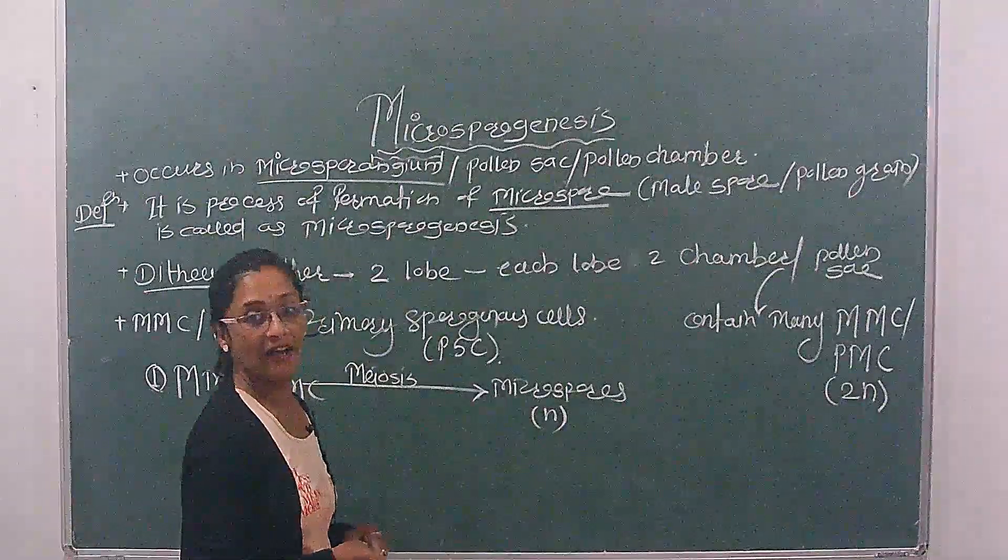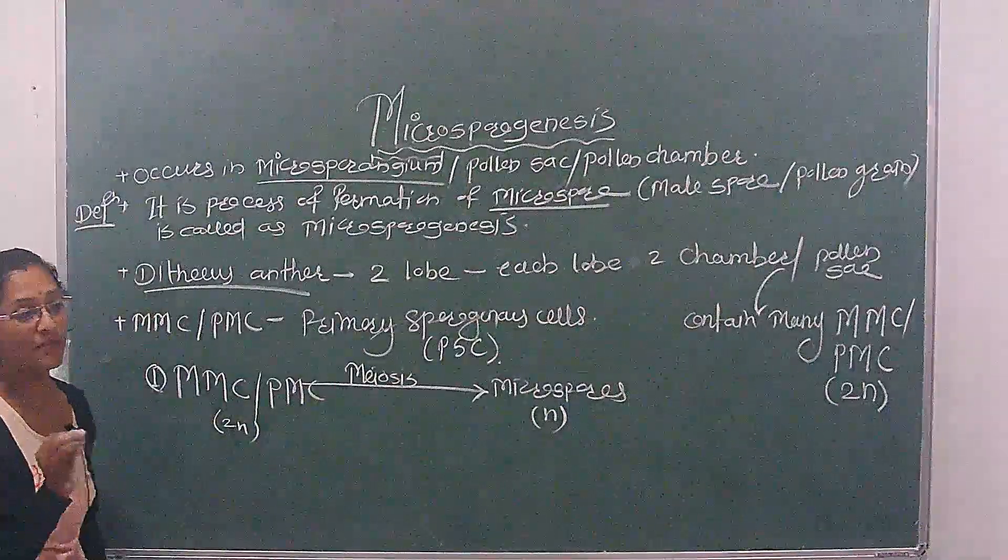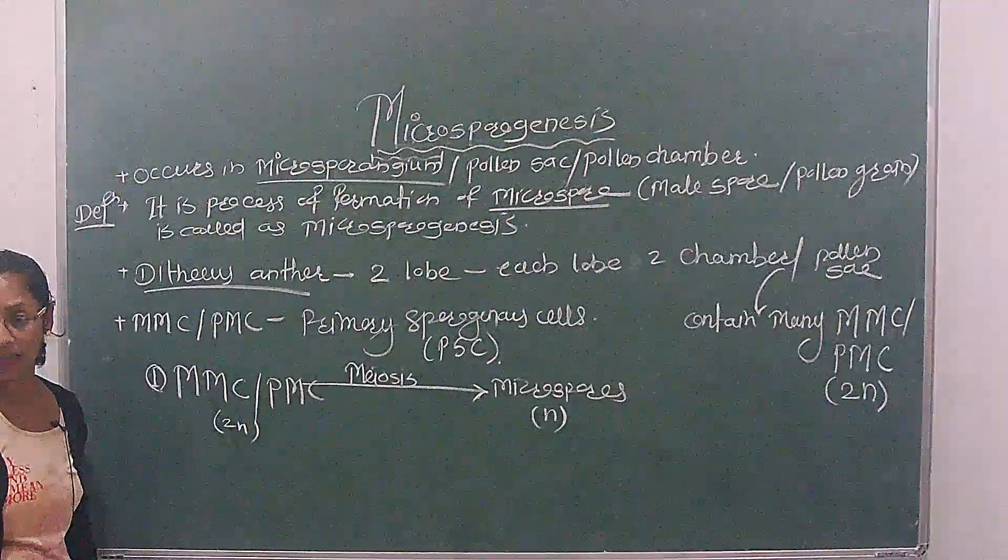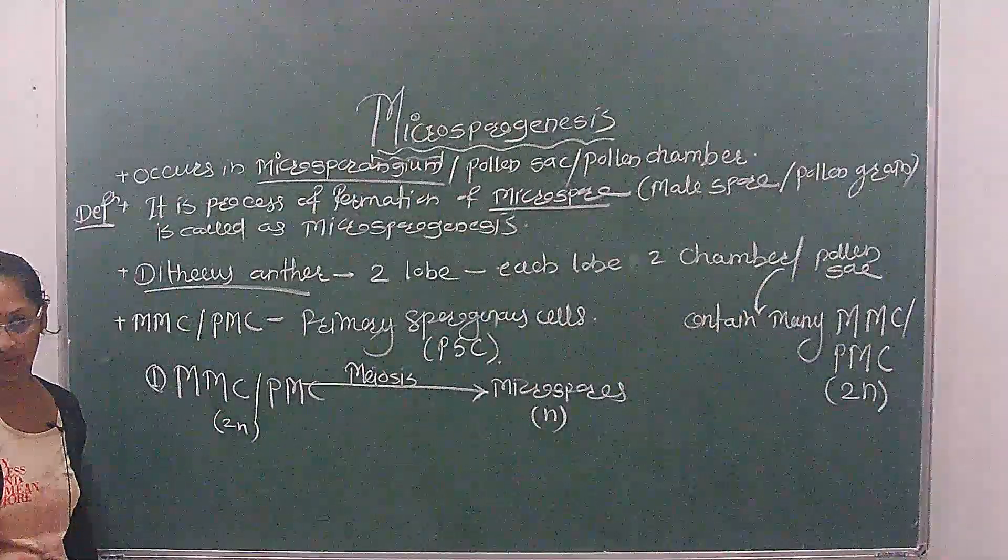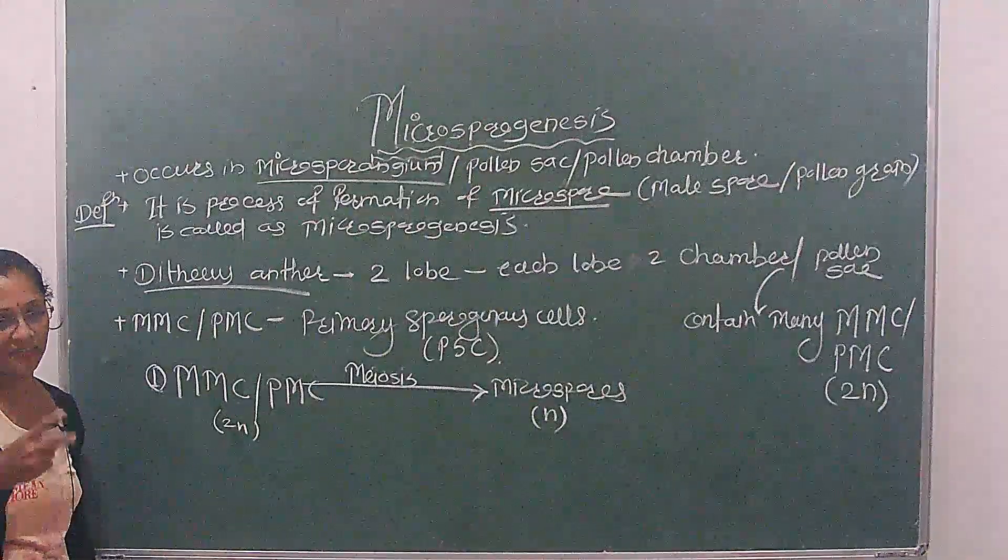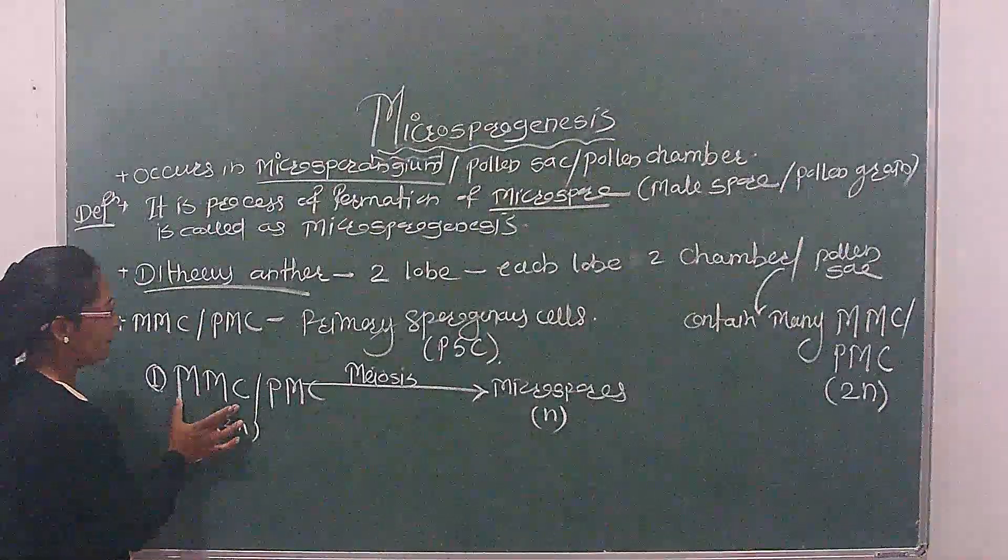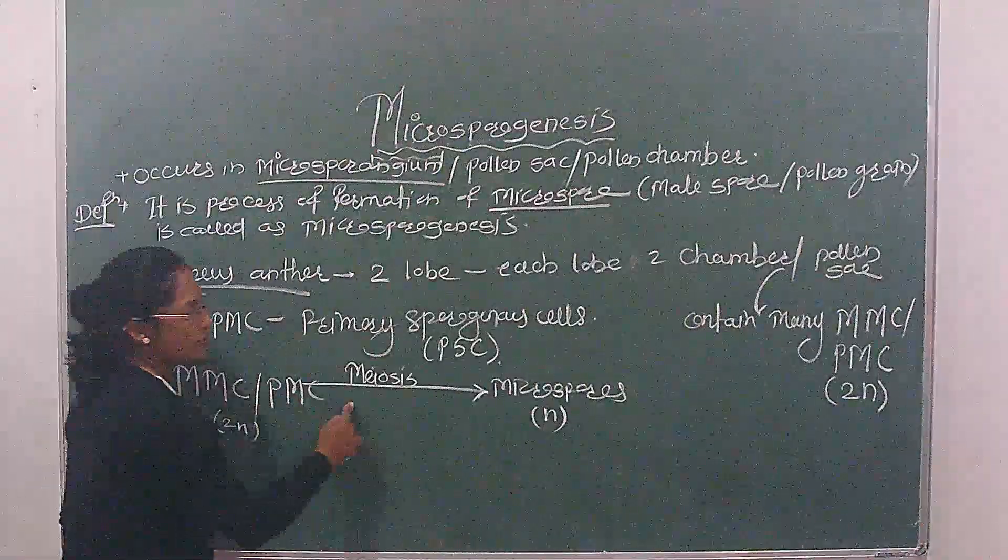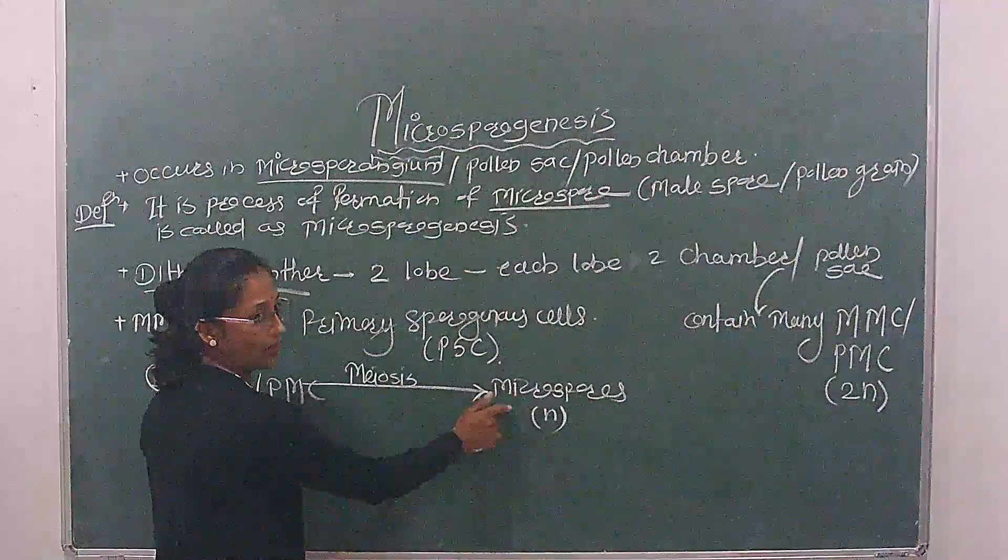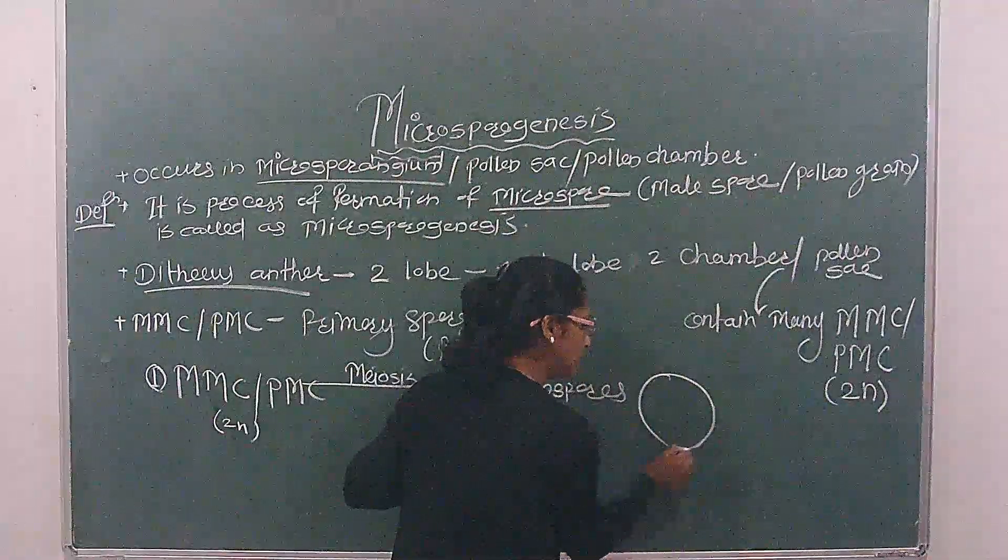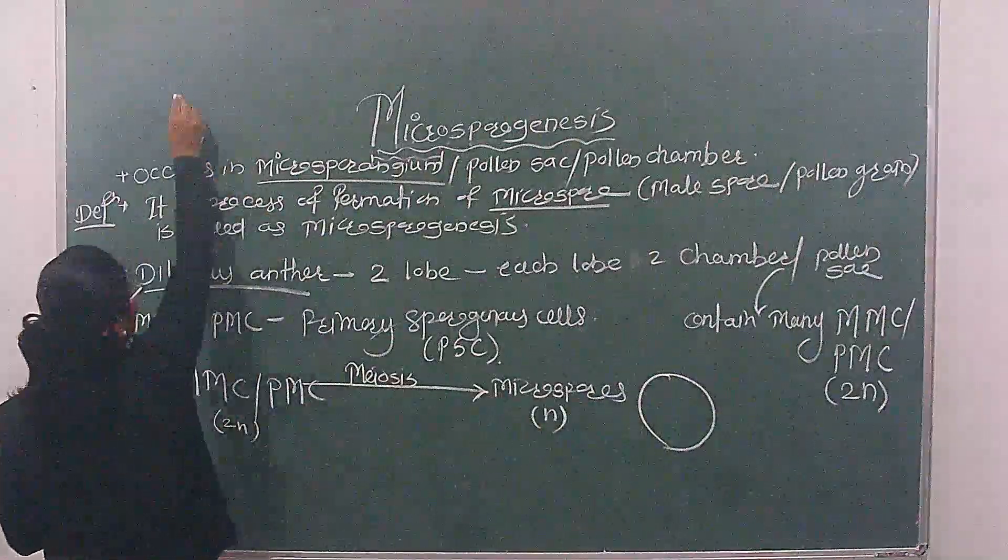In meiosis, we have seen in detail in 11th how many daughter cells are formed? Four. In mitosis we have one parent cell and two daughter cells. MMC undergoes meiosis to form four haploid microspores.